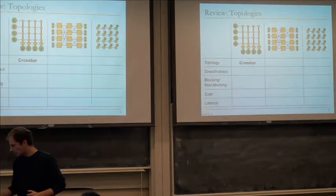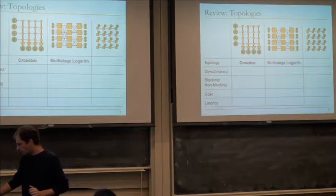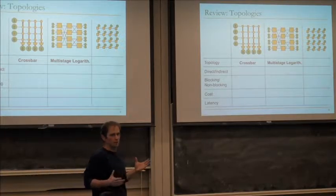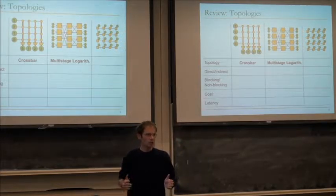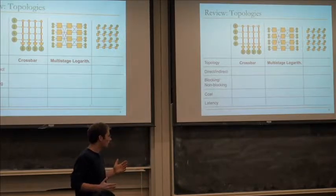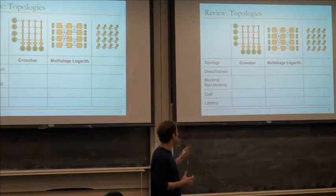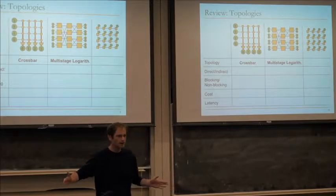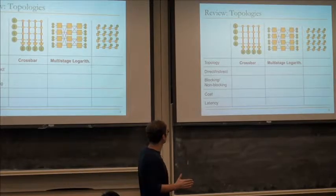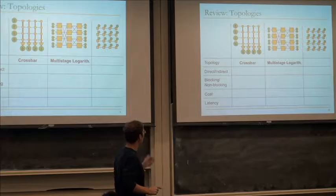Just to give a brief review — we talked about topology. I'm showing three different examples here. The first one is a crossbar. In this example we have four nodes, with outputs on the left and inputs on the bottom. A crossbar gives every possible connection, so if any node wants to send a flit or packet to another node, there's a crossing point or switch element between any pair. If node two wants to send to node one, this switch turns on after arbitration and the packet flows from two to one.